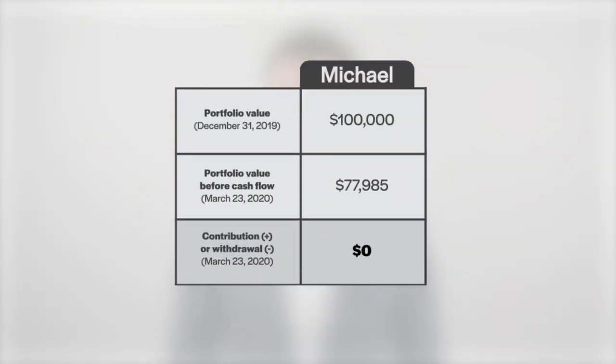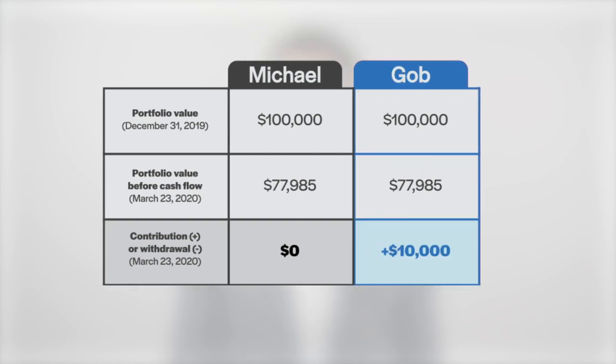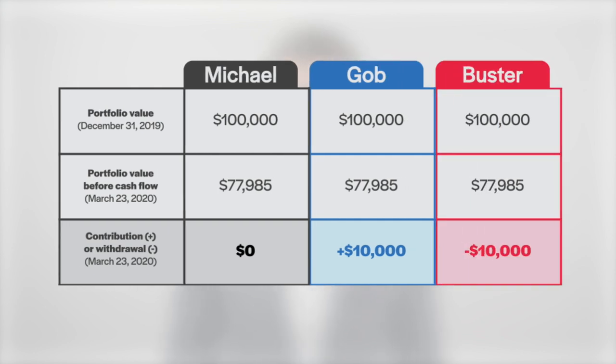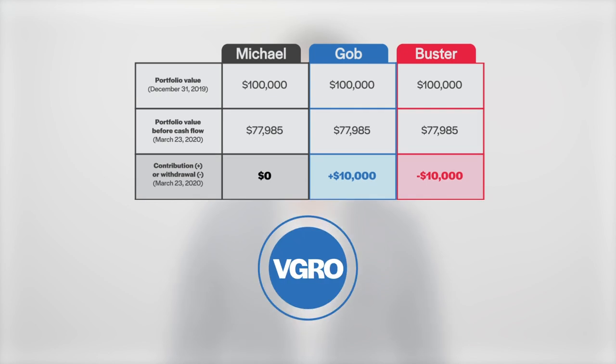Before we focus on the money-weighted rate of return, a brief recap is in order. Assuming you've now caught our Part 1 episode on the time-weighted rate of return, you've now met our three fictional investors. First, there is Michael, who made no additions or extractions all year. Then there is Job, who added $10,000 to his portfolio on March 23rd. And last, there is Buster, who withdrew $10,000 from his portfolio on March 23rd.